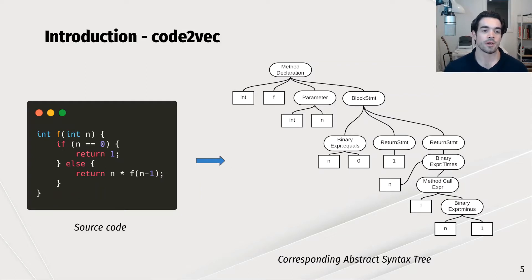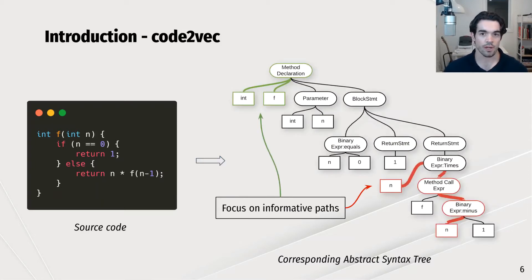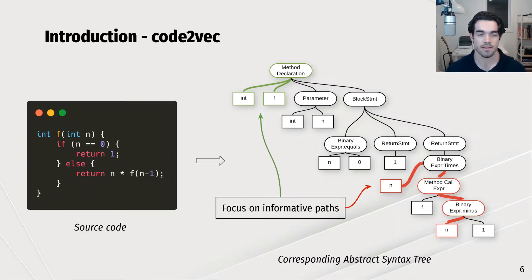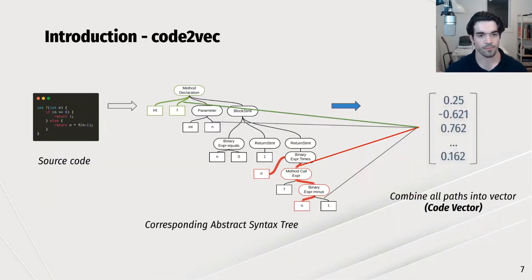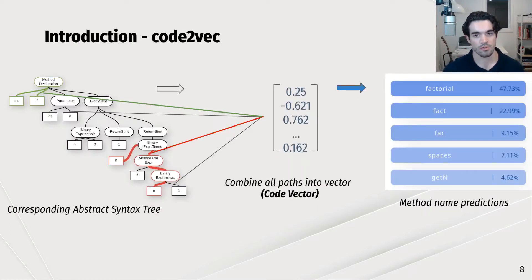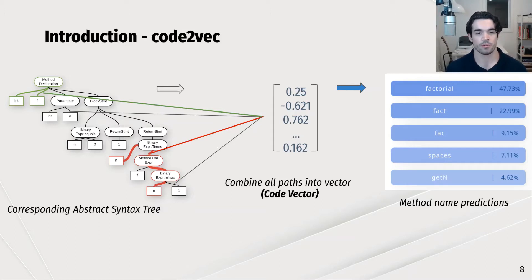How does Code2Vec represent code? The method first converts source code into an abstract syntax tree, which contains the raw functionality of the code. It then enumerates all paths between nodes on the tree and combines them. A key part is that it learns to focus on certain paths that are highly predictive, weighting them more. It uses this weighted combination to create a single vector representing the code snippet — the code vector — which is used for method name prediction. The loss from this is back-propagated through the model to learn the embeddings.